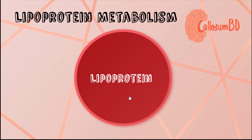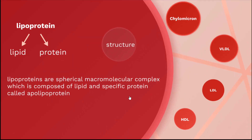First we need to know what is lipoprotein. From the name, we can guess that lipoprotein is composed of lipid and protein, so it's a complex lipid. The protein portion of lipoprotein has a special name which is called apolipoprotein, or simply apoprotein. By definition, lipoproteins are spherical macromolecular complexes composed of lipid and specific protein called apolipoprotein.